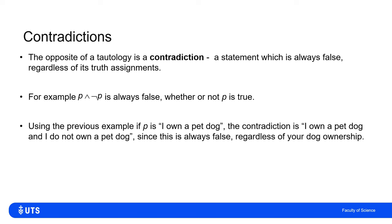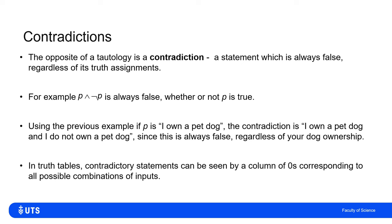Using the pet dog ownership example again, the statement 'I own a pet dog and I don't own a pet dog' together is a contradiction. I can't say I own a pet dog and I don't own a pet dog, because that will definitely be false. I would spot contradictory statements by seeing a column of zeros or falses — there is no combination of inputs which can possibly make the output true.